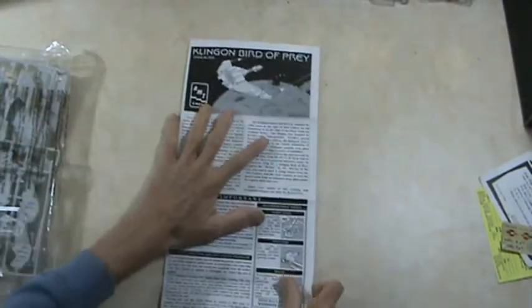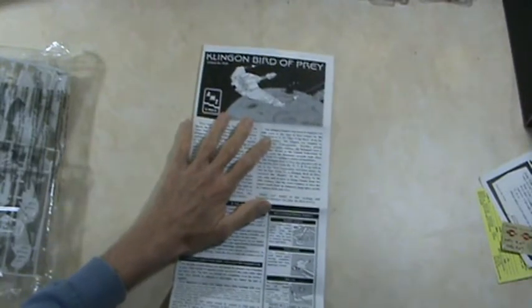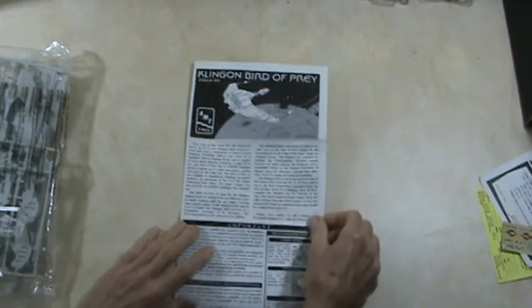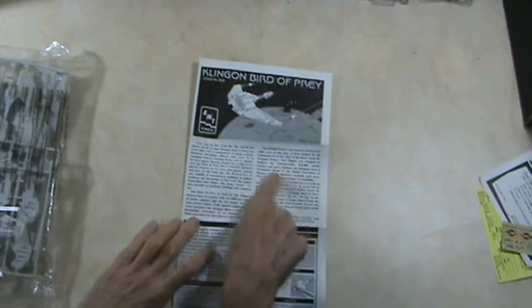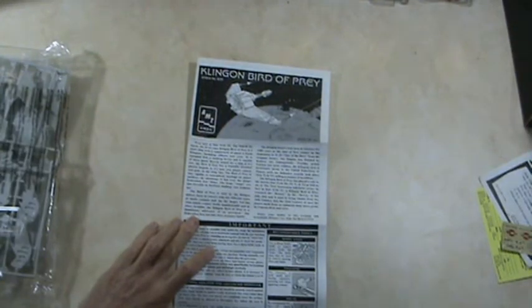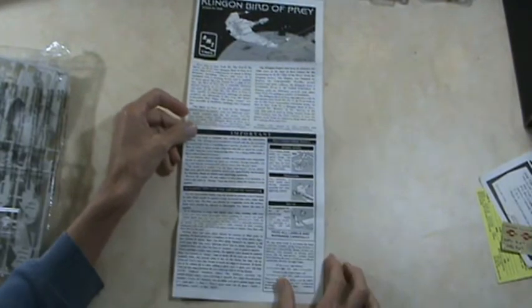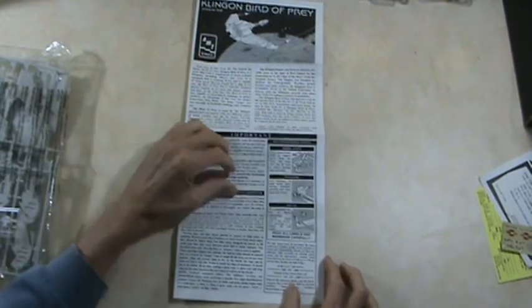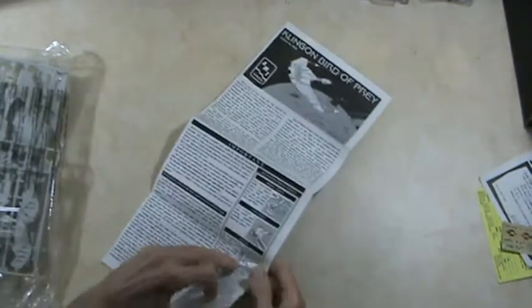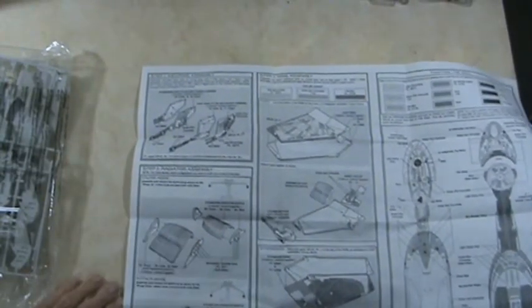So here's your instructions. I can't get it all in the picture, but we'll do what we can. Here you have your basic description of what the model represents, and then your important, read it first stuff, about being careful with the modeling tools, and all that stuff. So, here's the back. Let's take a look. We'll open it up here.